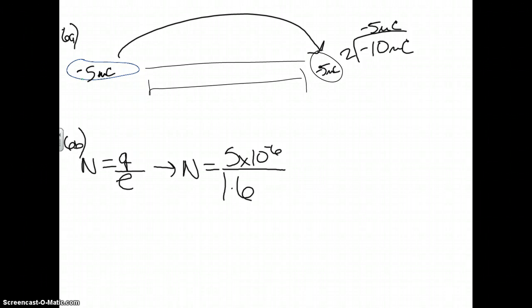1.6 times 10 to the negative 19. When you plug that into your calculator you should get 3.125 times 10 to the 13th electrons.